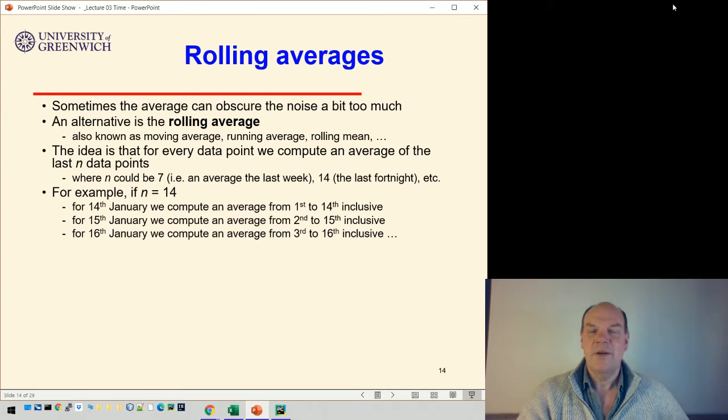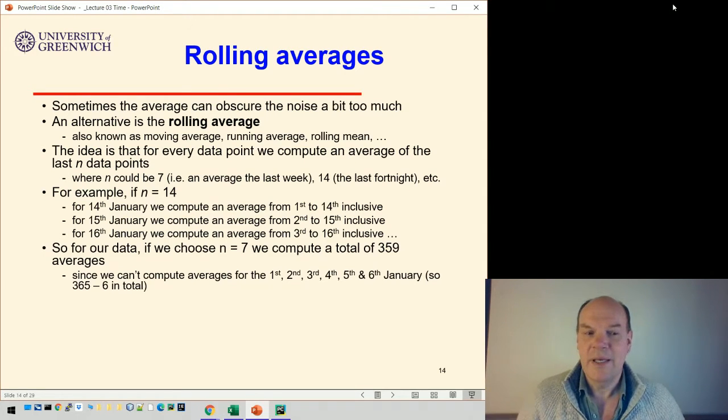For example, if n was 14, a fortnight, then for the 14th of January we'd compute an average for the 1st to the 14th inclusive. For the next day, the 15th, it would be from the 2nd to the 15th, and from the next day it would be from the 3rd to the 16th. So for a particular day, it's the average for the past n values, whatever that n is.